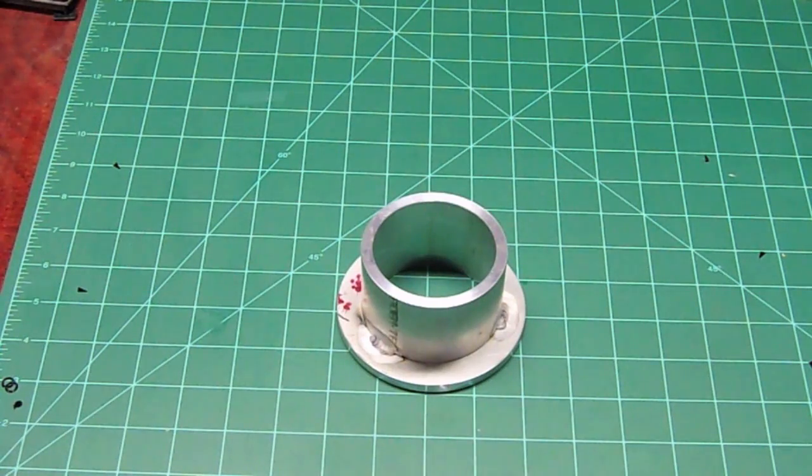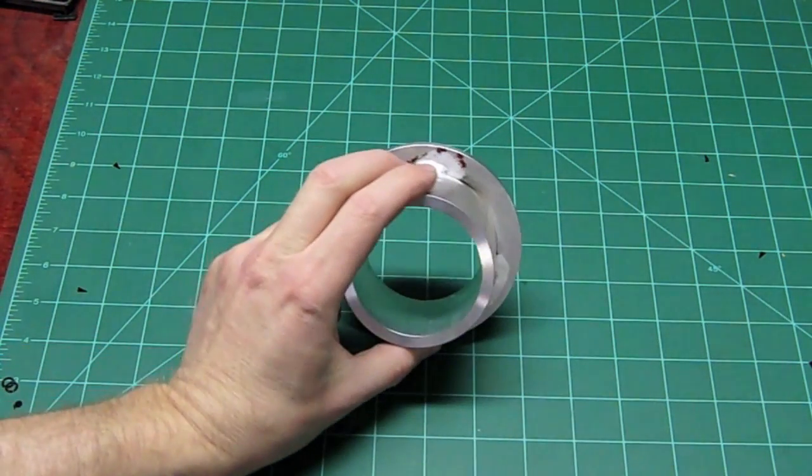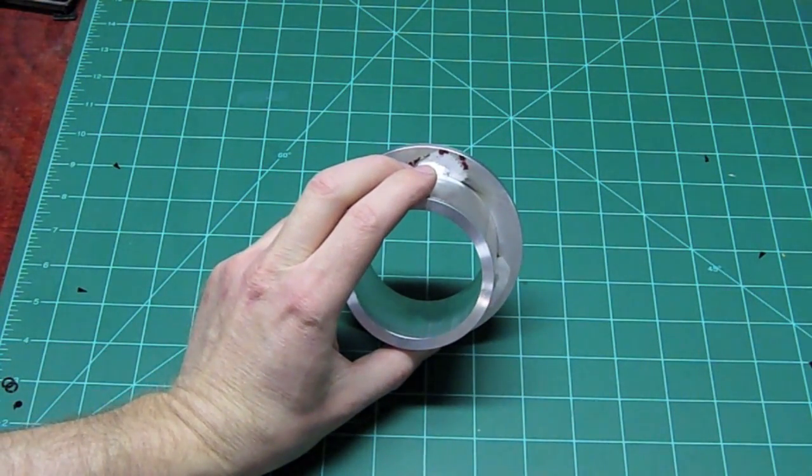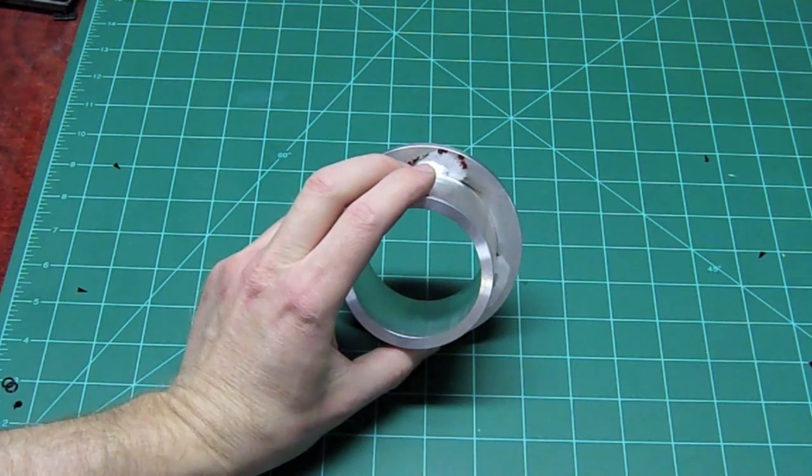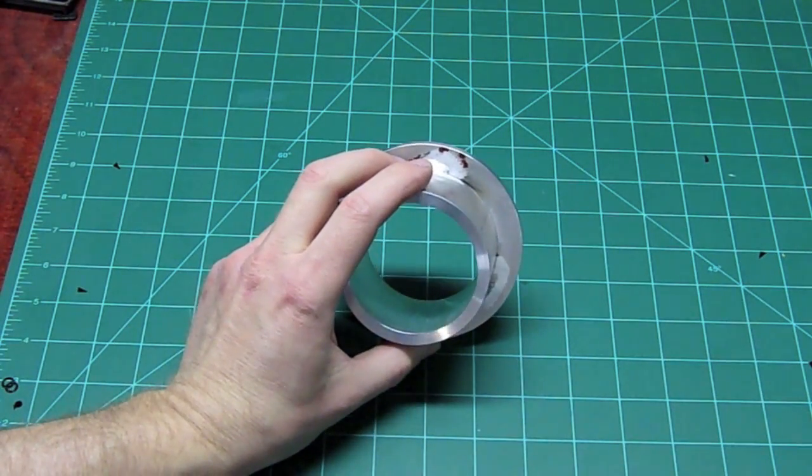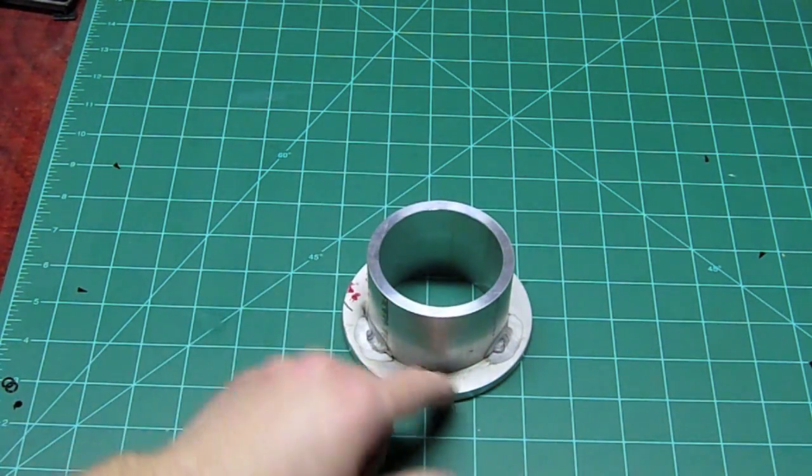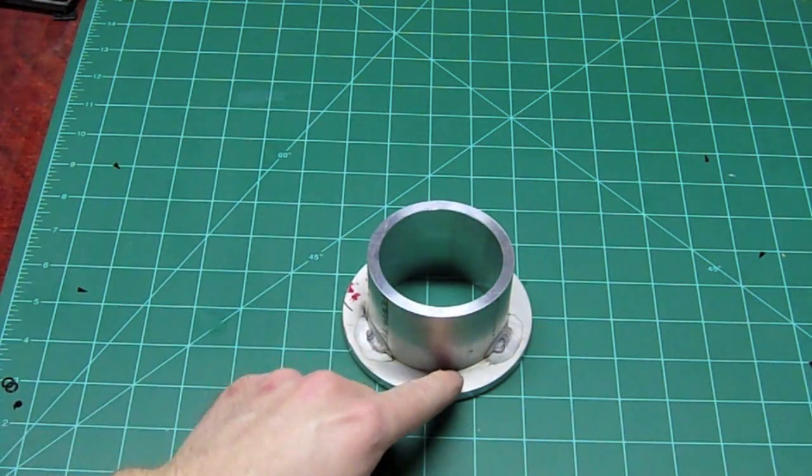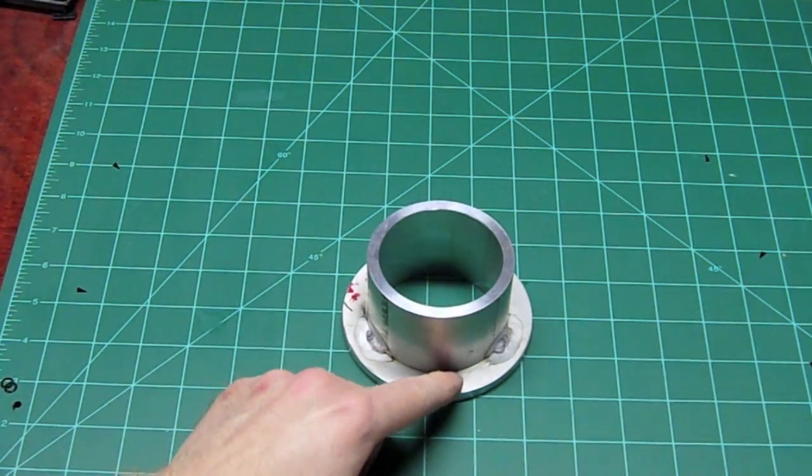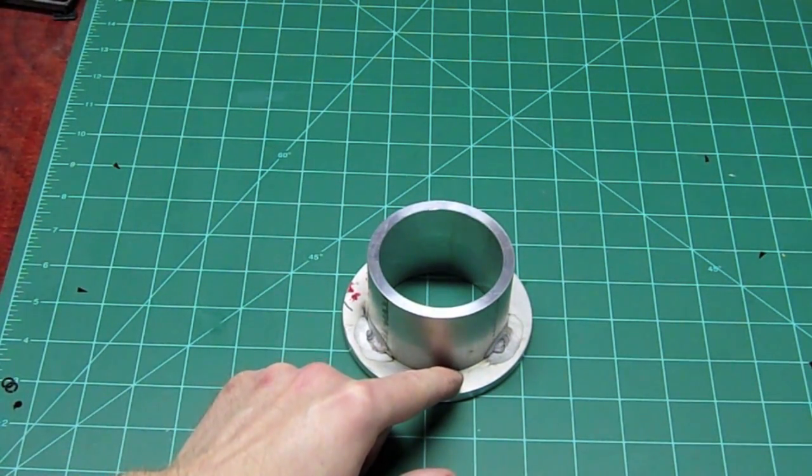Now what we need to do next is put some holes in this so I can mount it to the side of my sandblasting cabinet. I'm going to show you how I'm going to do that right now. We're going to put three holes in it, positioned right between the welds that hold the flange in place.